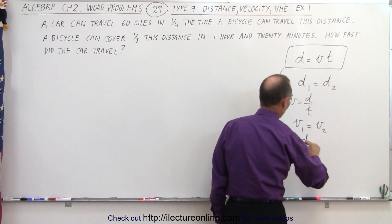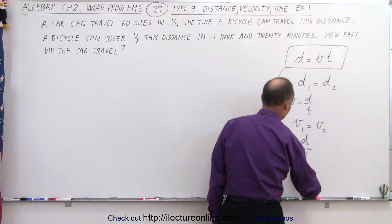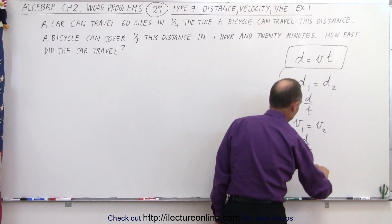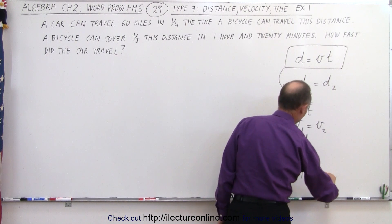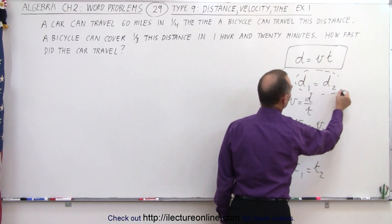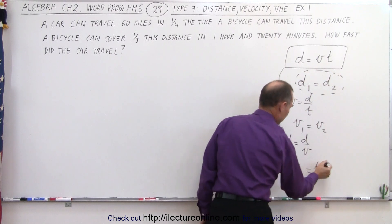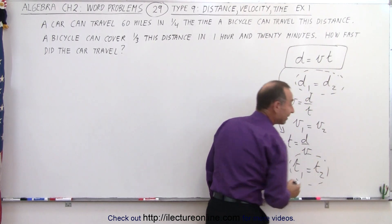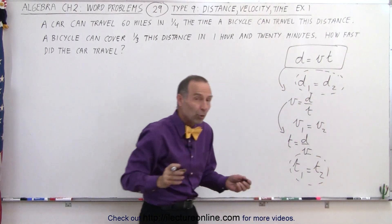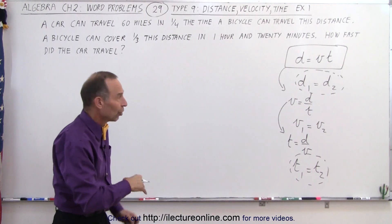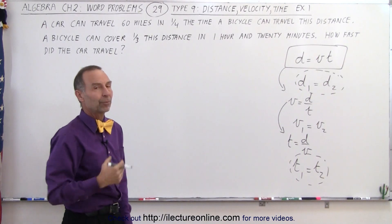Sometimes we solve for time: time equals distance over velocity, and we say that time one equals time two. These two approaches — equating distances and equating times — tend to be the most common ways to tackle these types of problems.